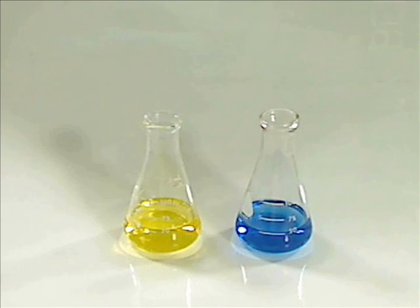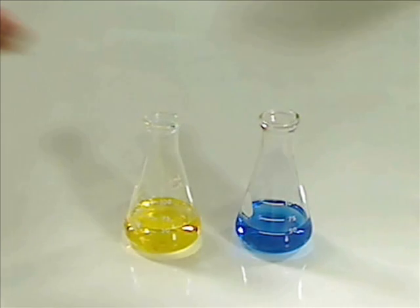Many pH indicators have two colors, one in the acid end, one in the base end. And what I want to show you next is an indicator called Bromethymol Blue. Its pH range is yellow at pH 6 or below, and it's blue at around pH 7.6 and above. As you can see here,